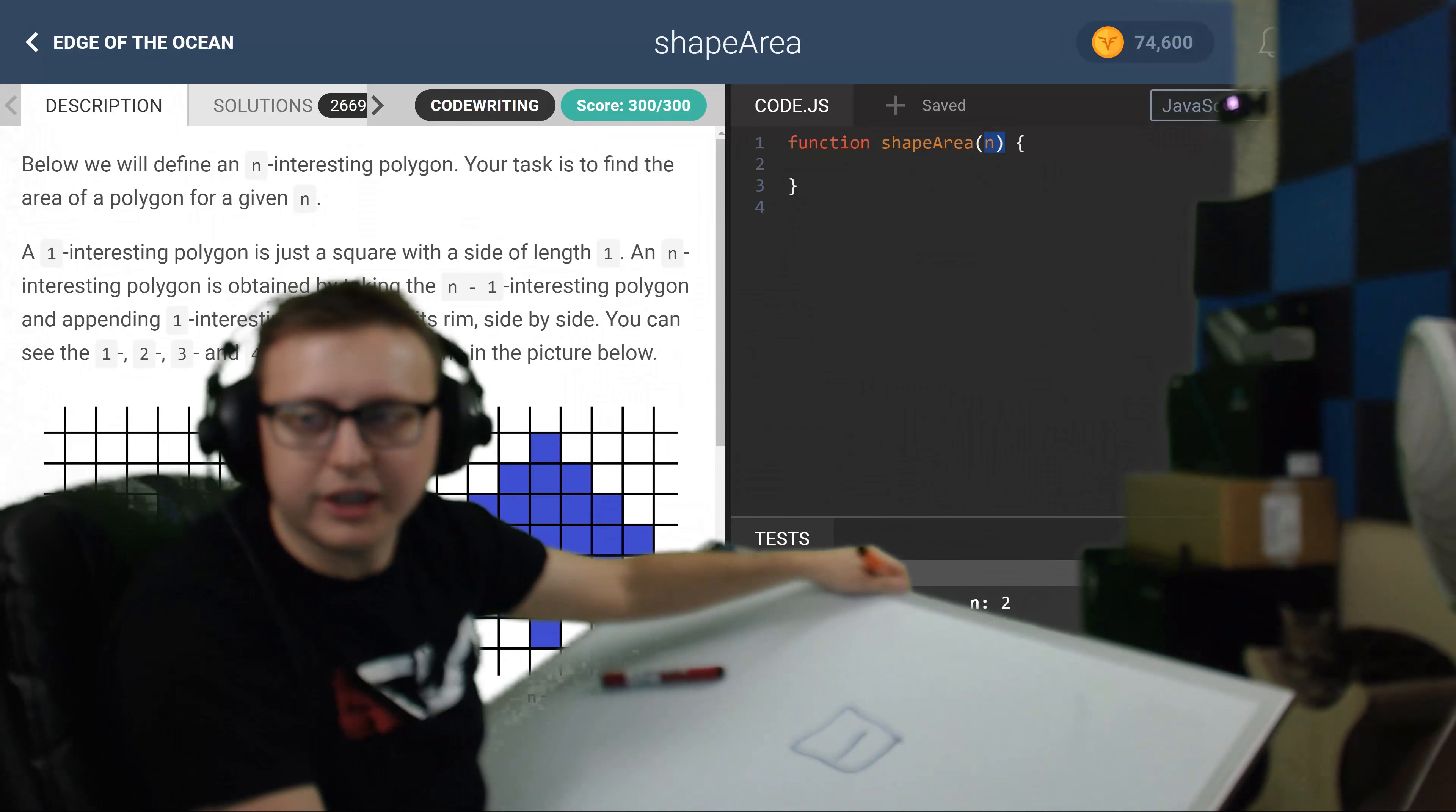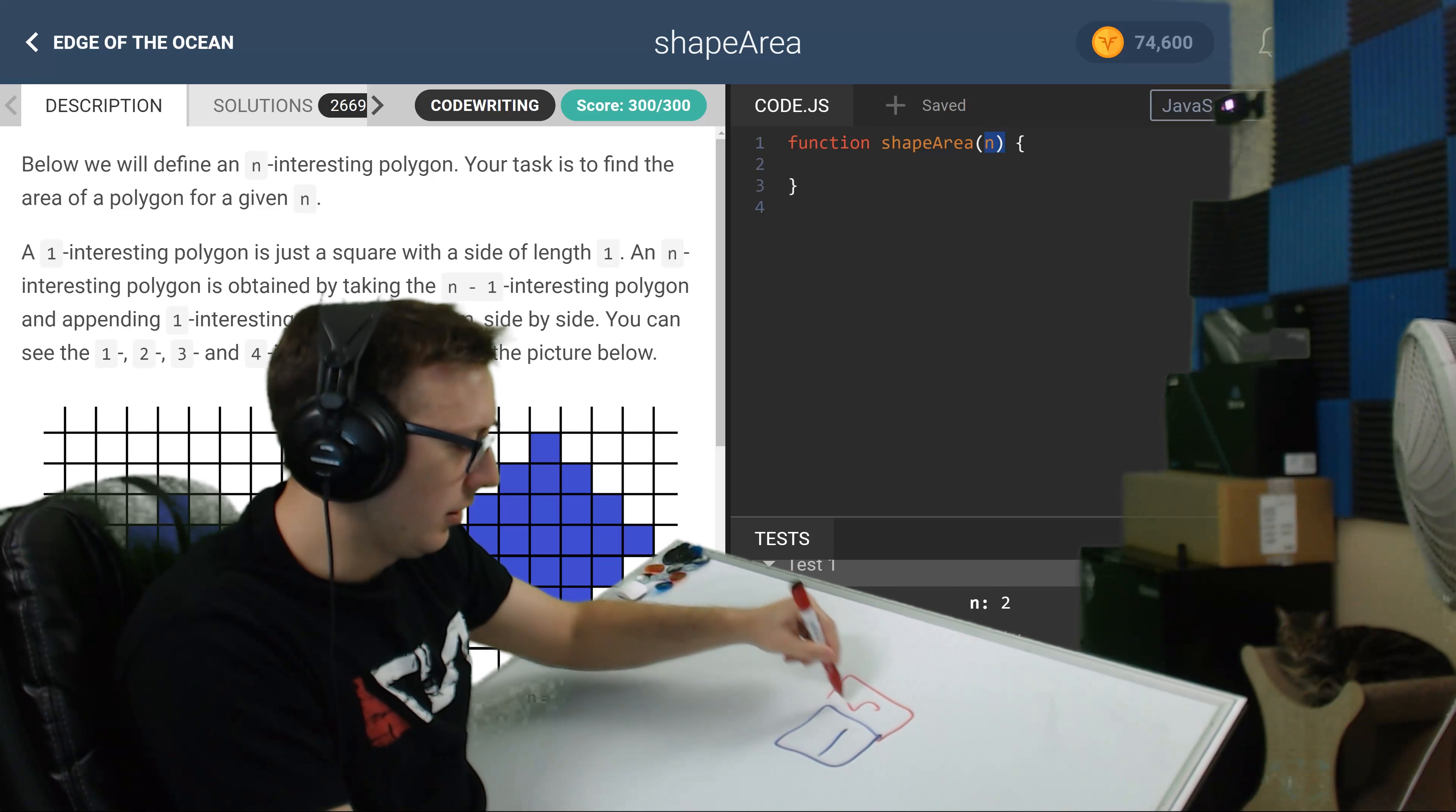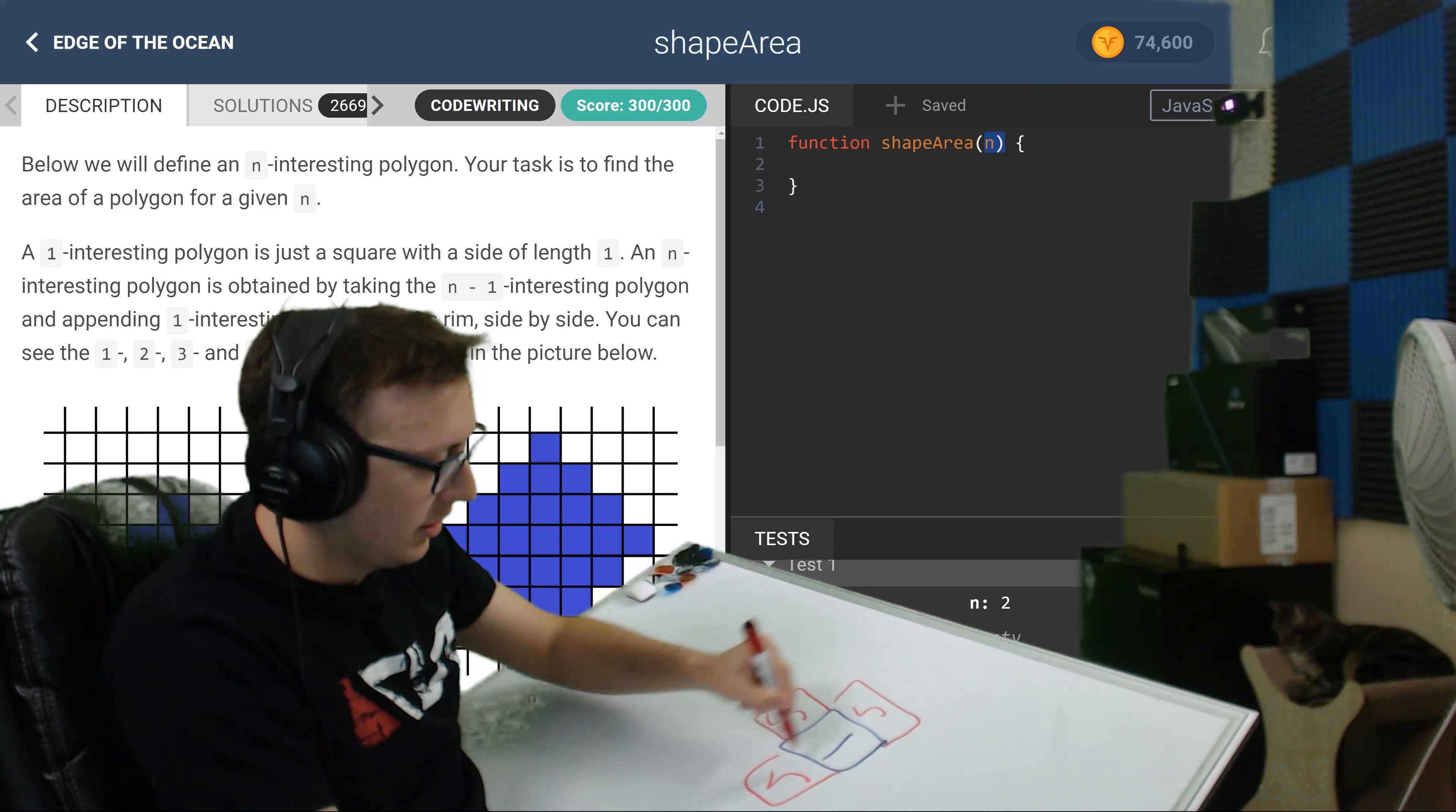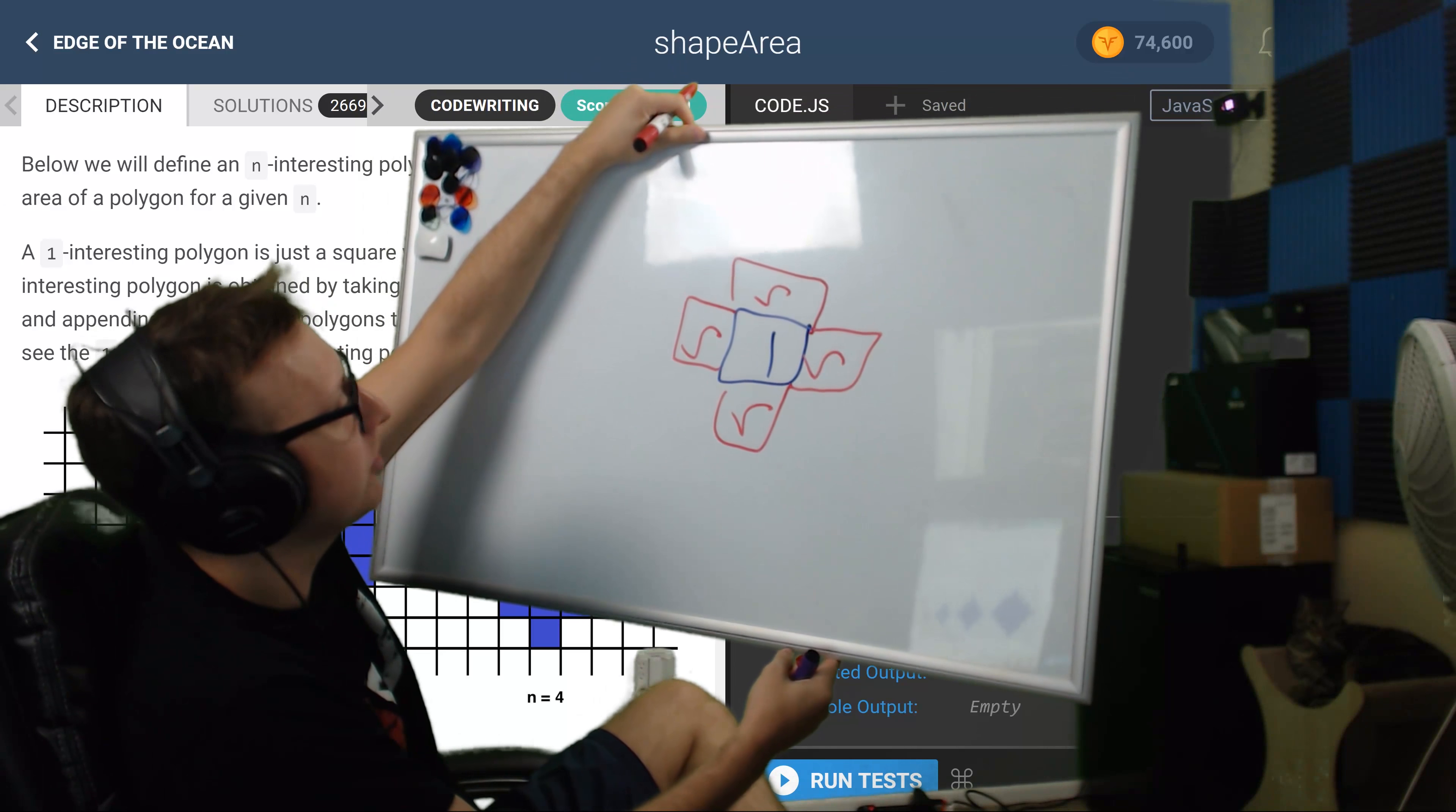So we'll have this, we'll put a one, right? So there's our one. That's n is equal to one. So what changes between n is equal to one and n is equal to two? Well, we get a couple ones on, we get a couple side pieces, and my girlfriend's gonna hate me for that joke.